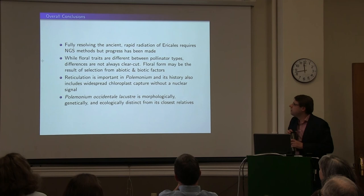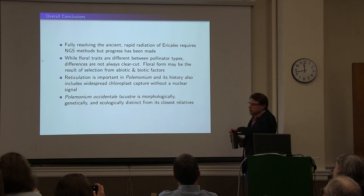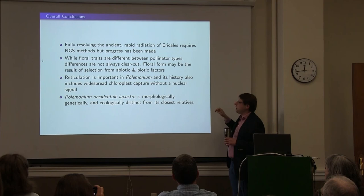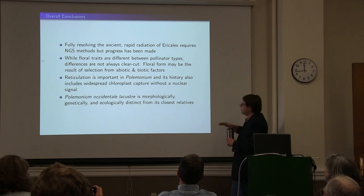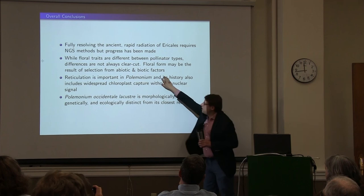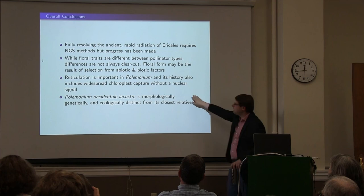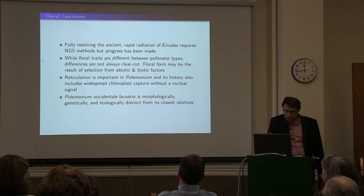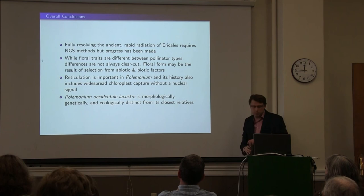Overall, fully resolving the ancient rapid radiation of the Ericales is going to require a next-generation sequencing approach with multiple nuclear loci. In terms of Polemoniaceae, floral traits are different between pollinators but the differences aren't always clear cut, and floral form may be the result of selection from abiotic factors such as climate, as well as biotic factors such as pollinators. Reticulation is important in Polemonium — its history also indicates that there could be widespread chloroplast capture without a signal in the nuclear genome. And finally, Polemonium lacustre is morphologically, genetically, and ecologically distinct from its closest relatives.